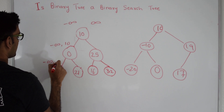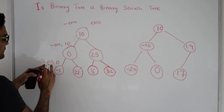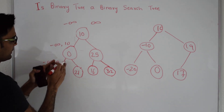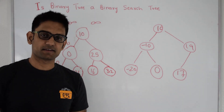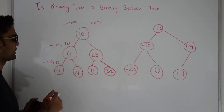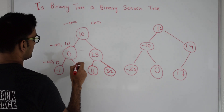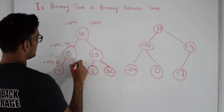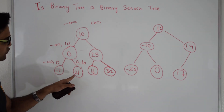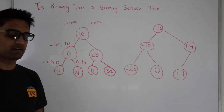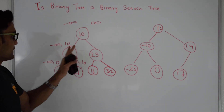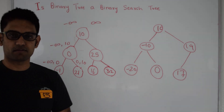0 is between minus infinity and 10. So 0 goes to its left and says your range should be minus infinity and 0, and minus 1 is in this range — so this returns true. When 0 goes on the right side, it sends 0 as the lower bound and 10 as the upper bound. So 21 is not between 0 and 10, so this returns false — and this is not a binary search tree.